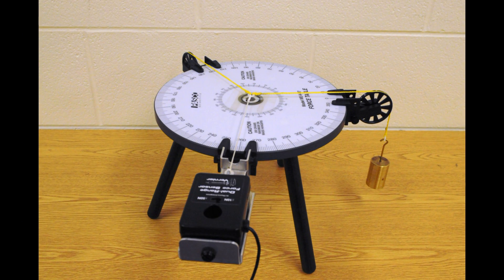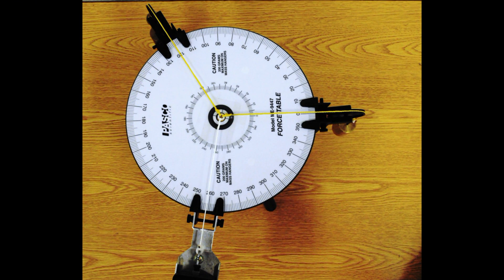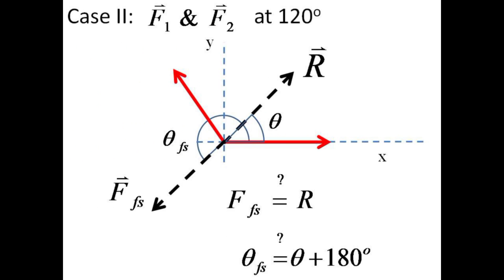Here is the force table view. And from above, you may now record the angle for the force sensor string, and push the start button to record its magnitude. Again, the magnitude of force from the force sensor should be equal to the theoretical prediction for the magnitude of the resultant R. The angle for the force sensor string should be 180 degrees greater than the predicted angle for the resultant.